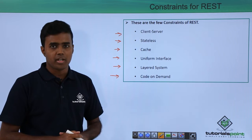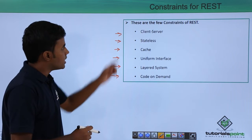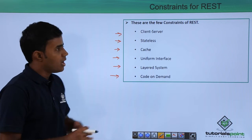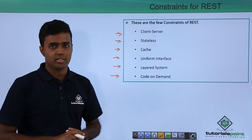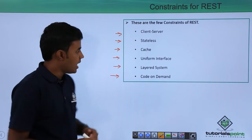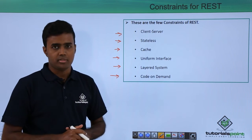Of these six different constraints, the first five constraints are compulsorily necessary and the last one is optional.